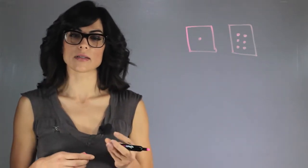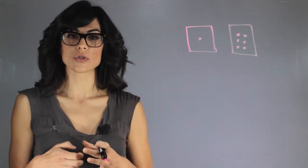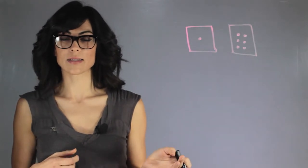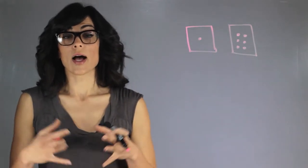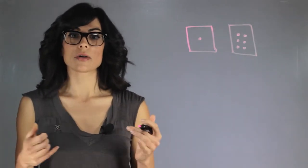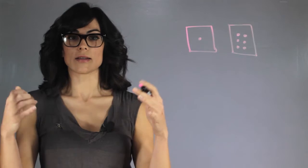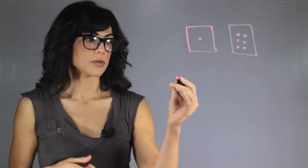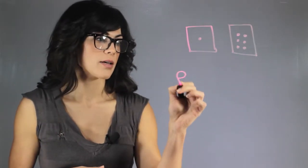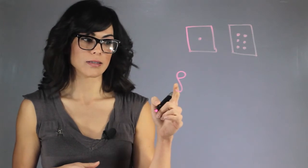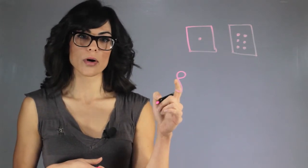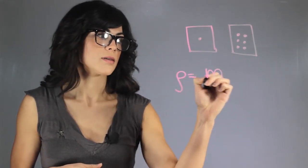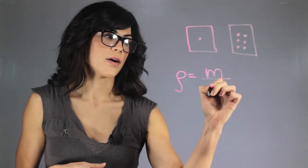The same thing is happening in stars. Generally, the bigger the star is, the more mass it has, and also the bigger the volume, so it tends to be a little more dense than usual. The general relationship is that rho, the symbol for density, is the mass divided by the volume.